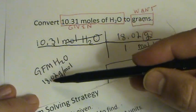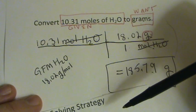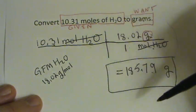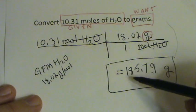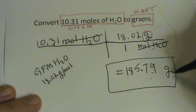Well, if one mole is about 20 grams, and I have 10, 10 times 20 is 200. So I should be somewhere near 200. I think that's close enough that we can be pretty confident that our answer makes sense. And we went from moles to grams.